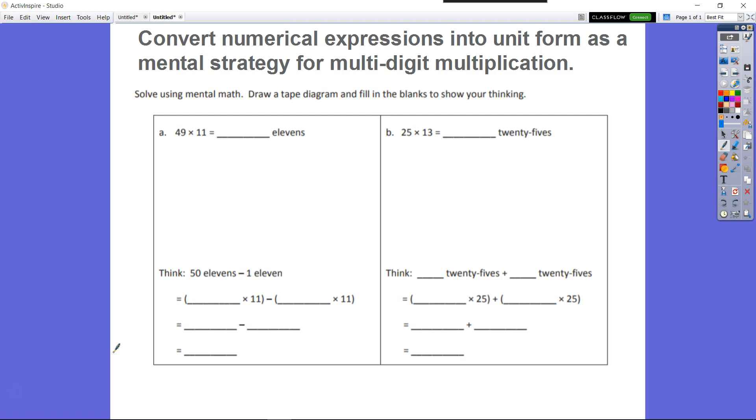Module 2, Topic B, Lesson 4. Our objective is to convert numerical expressions into unit form as a mental strategy for multi-digit multiplication. So now what we're doing is we're trying to use mental math here, and our directions ask us to solve using mental math. Says draw a tape diagram and fill in the blanks to show your thinking.